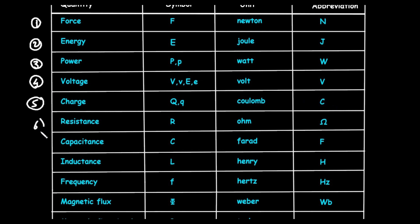Next is resistance. Resistance is represented by symbol capital R, and it is measured in ohm. The abbreviation for ohm is omega (Ω).